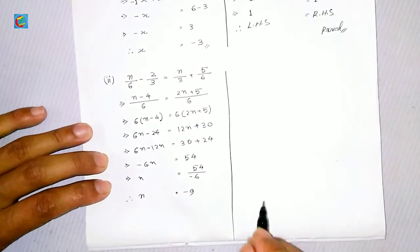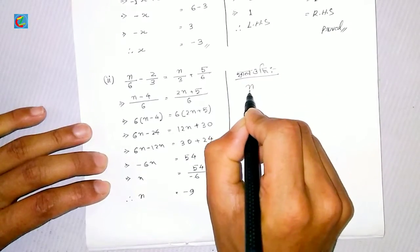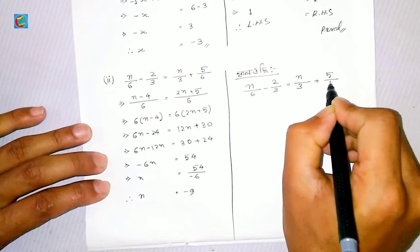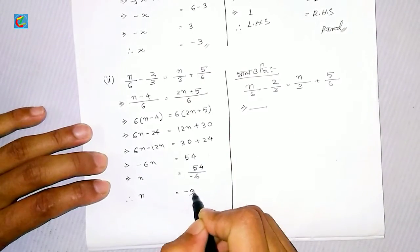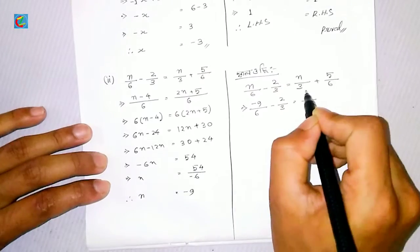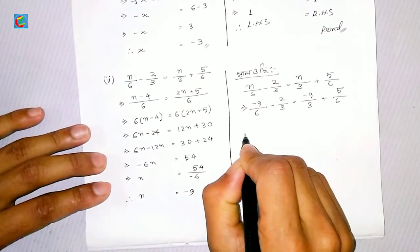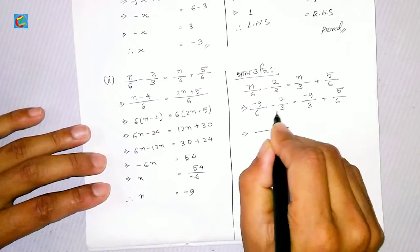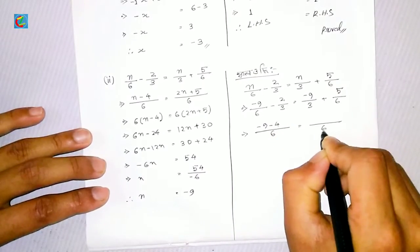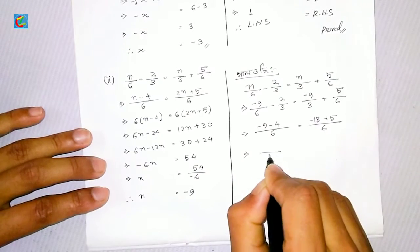Now I will verify. Putting n equals minus 9 into n divided by 6 minus 2 divided by 3 equals n divided by 3 plus 5 divided by 6. So minus 9 by 6 minus 2 by 3 is equal to minus 9 by 3 plus 5 by 6. Minus 9 by 6 minus 4 equals 5 minus 9 by 6. I'm going to verify this result as the final answer.